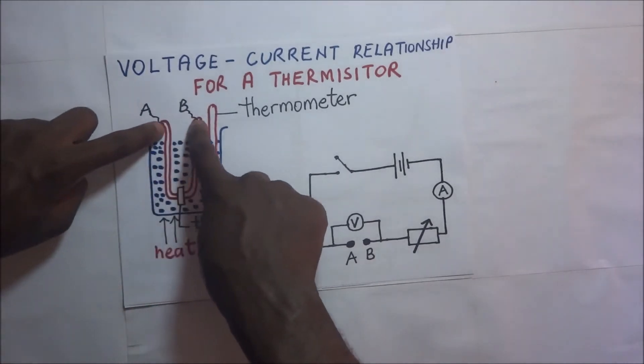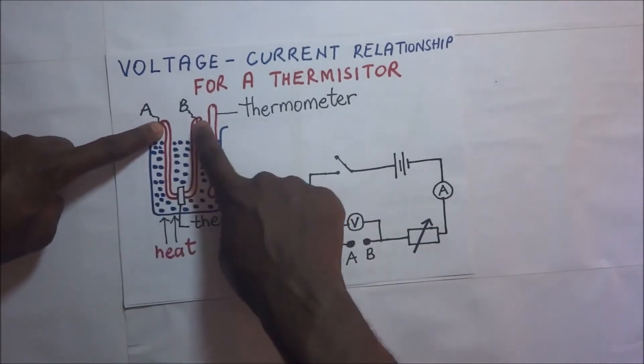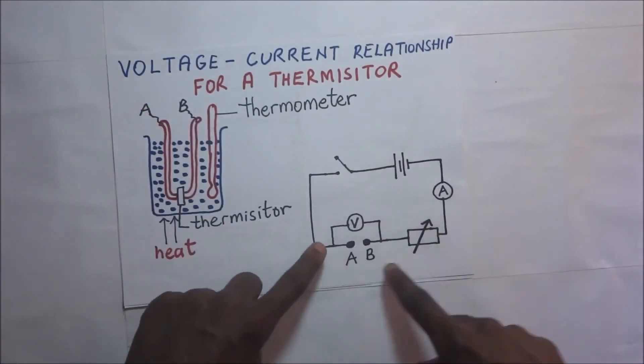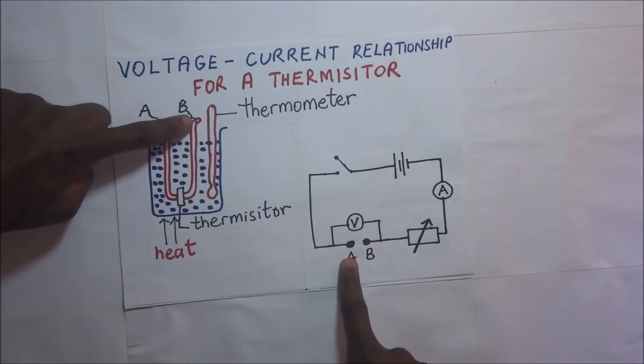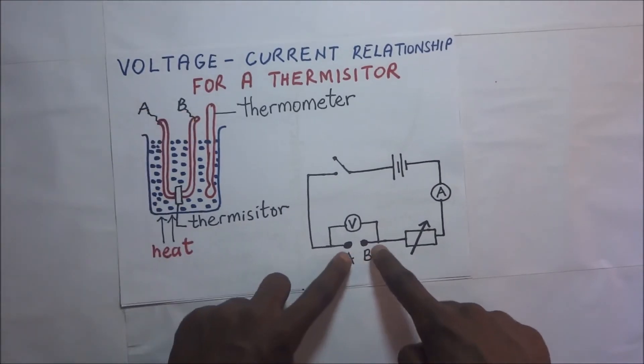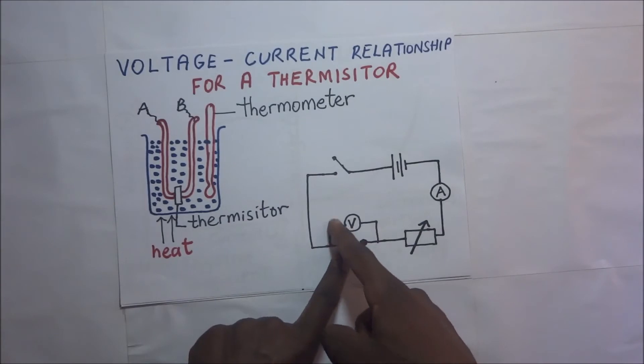We are going to connect these two terminals that are connected to the thermistor, terminals A and B, in this circuit. Terminal A is connected right there and terminal B is connected right there. Across these two terminals A and B, we are going to put a voltmeter.